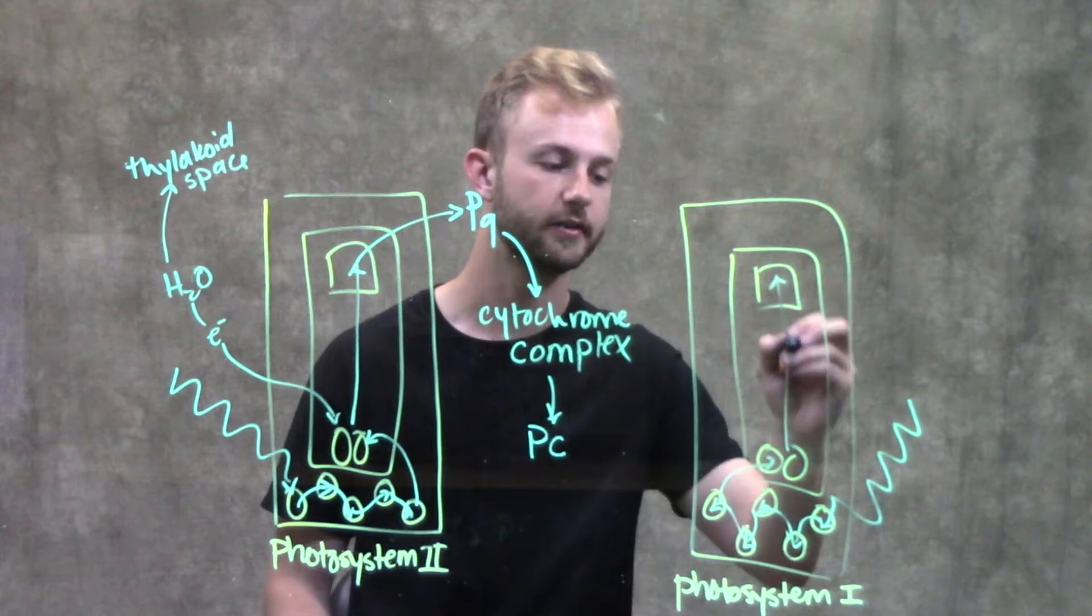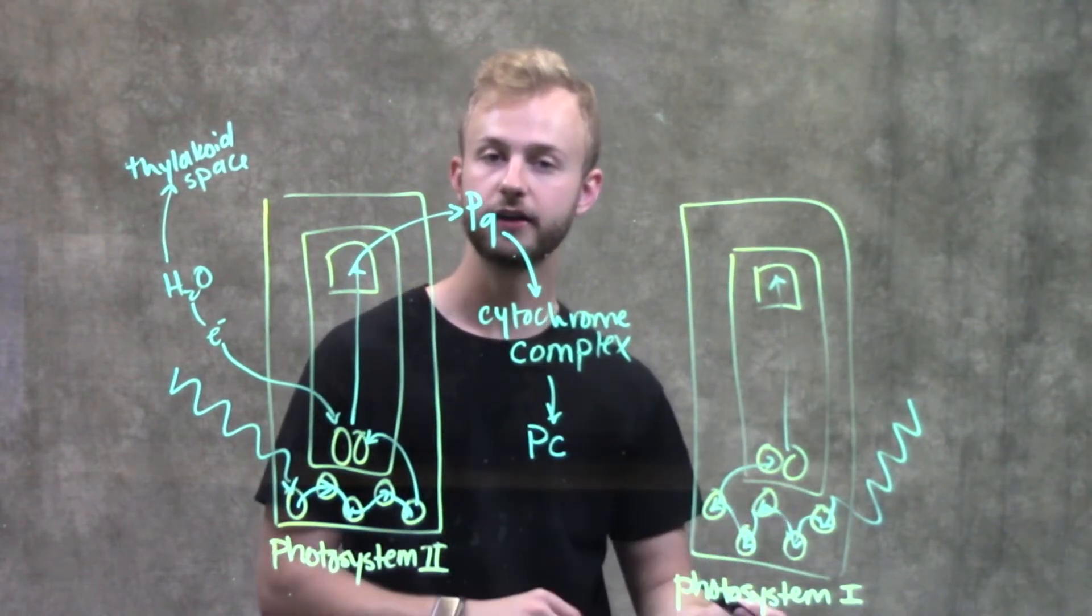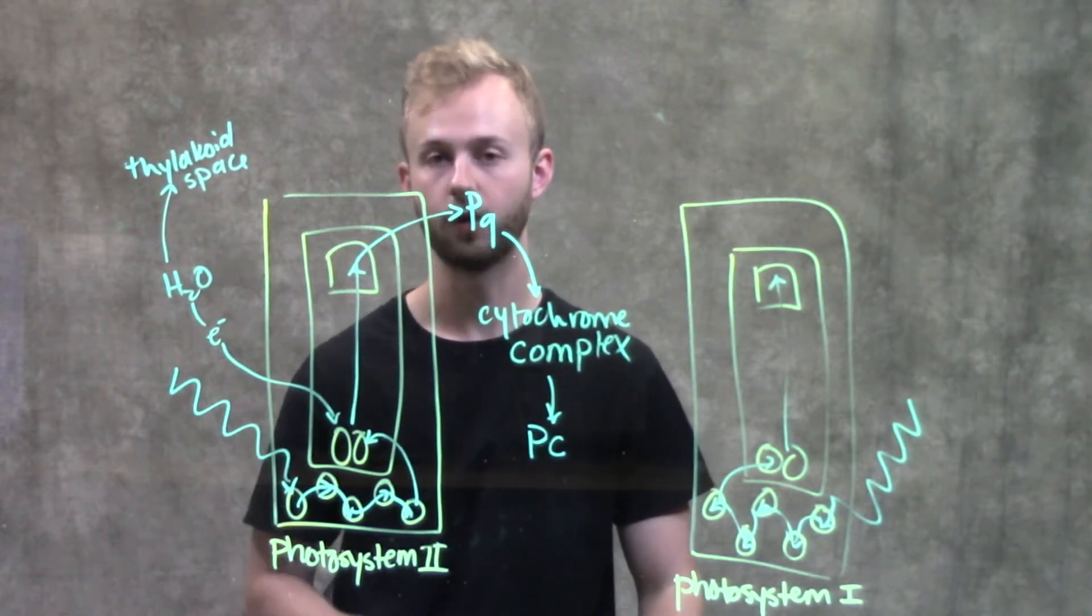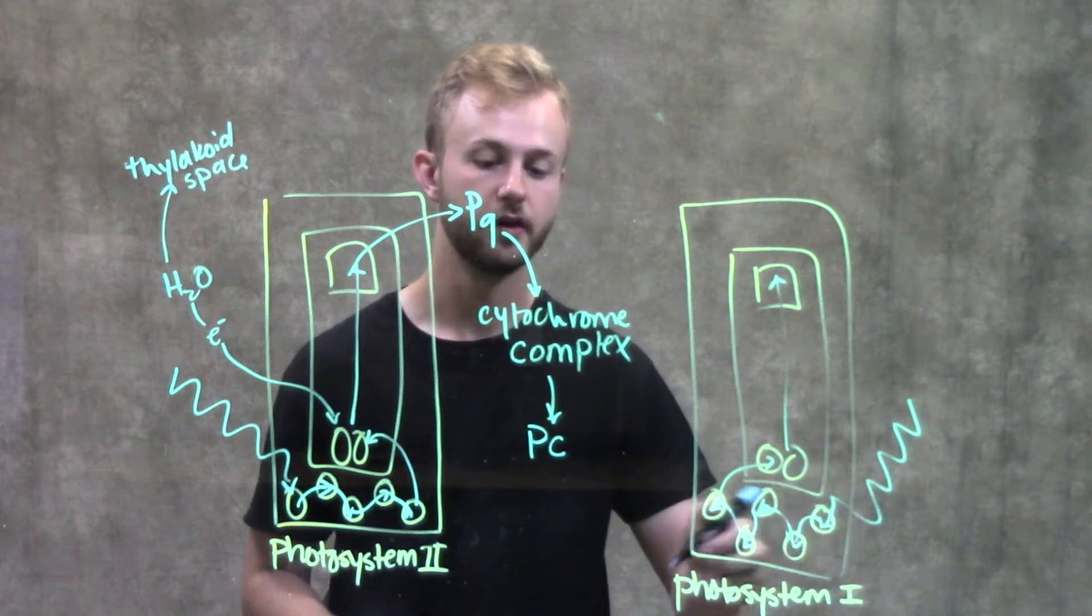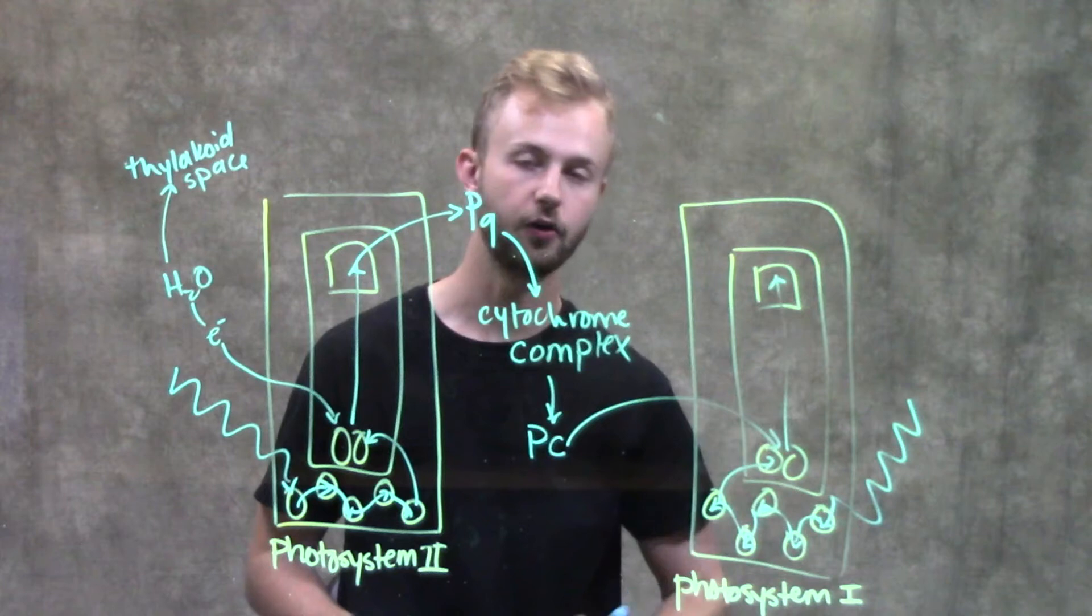Again, an electron gets excited and picked up by the primary electron acceptor, creating a hole that needs to be filled. In photosystem II, that hole was filled by water splitting. But in photosystem I, we use the electron passed through the electron transport chain to fill that hole.